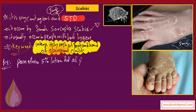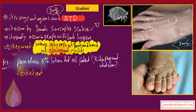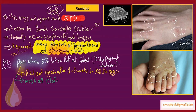The treatment of choice is permethrin 5% lotion for all patients — whether children, pregnant women, or otherwise. Retreat again after one to two weeks in order to kill the eggs of scabies. Also wash all clothes in hot water to kill the eggs.